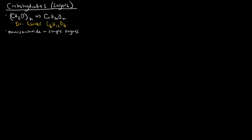When we think about carbohydrates, we normally think about the most basic one being glyceraldehyde. I'm drawing the Fischer projection: it has CHO at the top, then CHOH, and then a CH₂OH. Now, glyceraldehyde has three carbons and it has an aldehyde group at the top, so it is specifically an aldotriose.